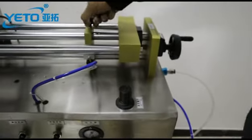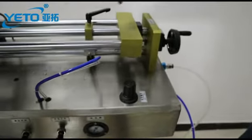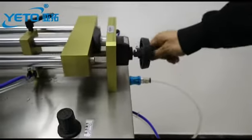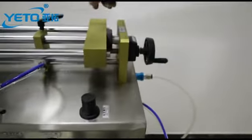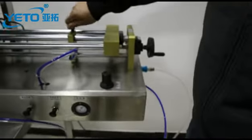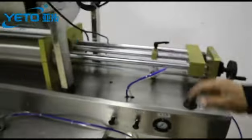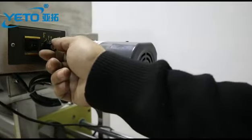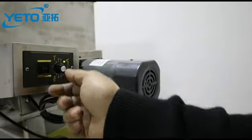Here is the lock of the machine. Release this one and adjust the filling volume from here. After your adjustment, then lock it. And here is for the speed changing of the mixers inside the tank, inside the hopper. The speed can be adjusted.